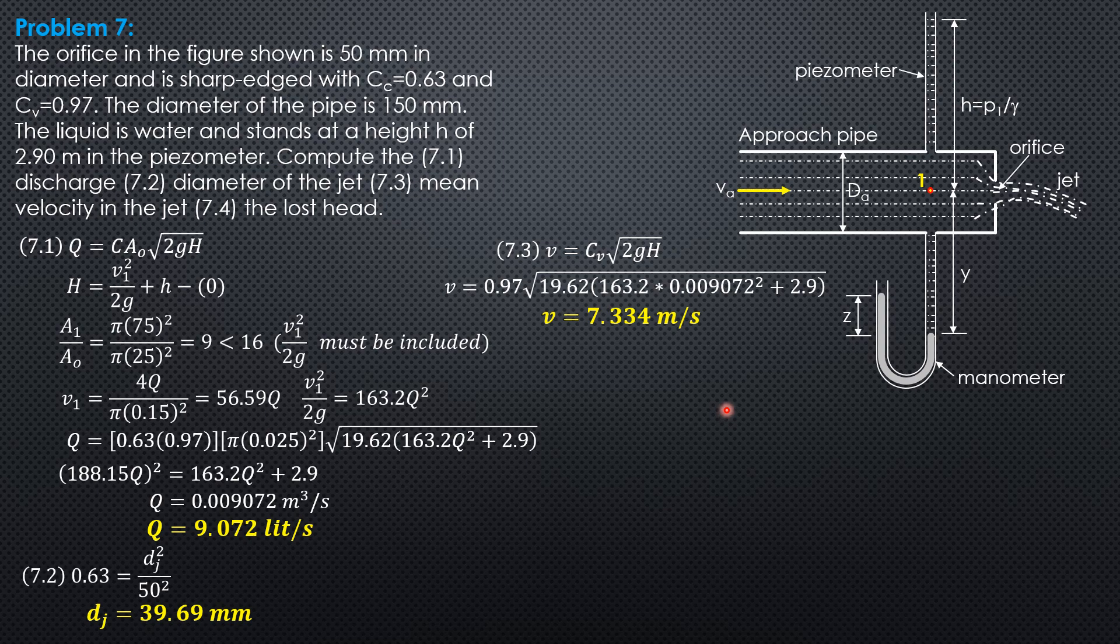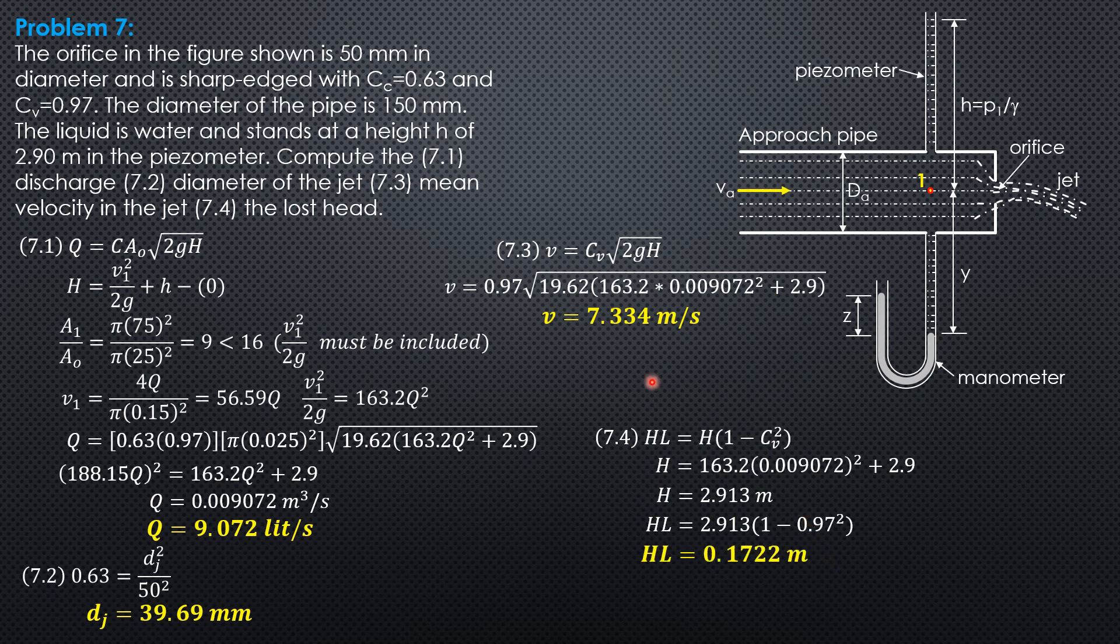Finally, the lost head is H(1 - C_v²), where H is 163.2 × (0.009072)² plus 2.9, which equals 2.913 meters. Substituting, head loss is 2.913(1 - 0.97²), giving a head loss of 0.1722 meters.